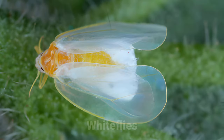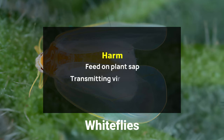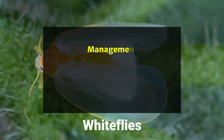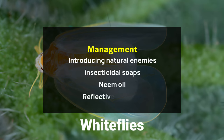White Flies harm: white flies cause direct damage by feeding on plant sap and transmitting viral diseases, leading to reduced plant vigor and yield. Management: white flies can be checked by introducing natural enemies like parasitic wasps, and using insecticidal soaps, neem oil, or reflective mulches to deter white flies.